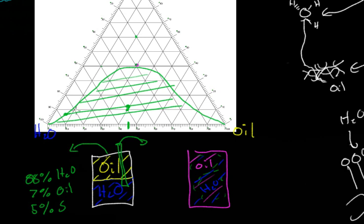And then the other part of that, the other phase in the system would be mostly oil being around 65% oil, 65% oil, very little water, maybe 15% water, yeah, 15% water, and 30%, 30% surfactant.